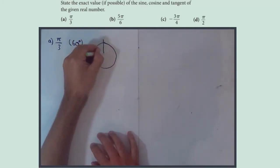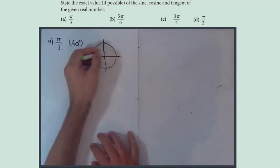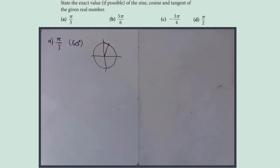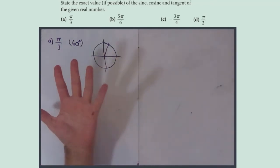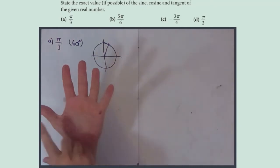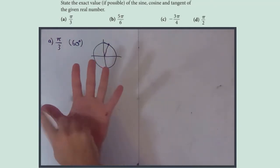We could potentially draw it on a circle — 60 degrees is here and we get some coordinates. I've always used the hand method; I find it really useful because you're allowed to take your hand into the exam with you. This covers zero to 90 degrees: zero, 30, 45, 60, 90.